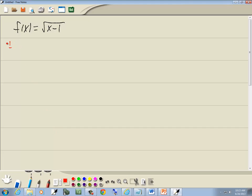Well, our first step, replace f of x with y. So this becomes y is equal to the square root of x minus 1.